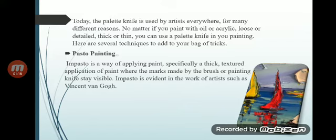Impasto is a way of applying paint — specifically, a thick texture application of paint where the mark made by the brush or painting knife stays visible. Impasto is evident in the work of artists such as Van Gogh.